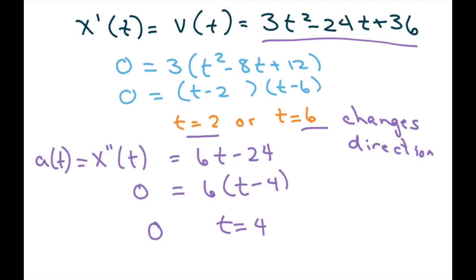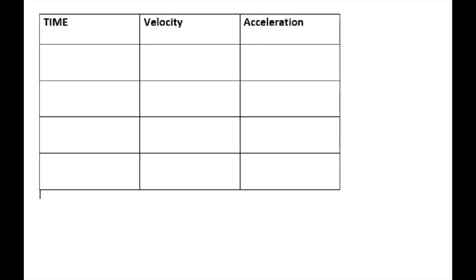Now, we want to find the time interval during which the particle is slowing down. So basically, what we want to do is look between, we have t equals 2 and t equals 6. So we want to look, we're going to start at 0, and we want to also go from 2 to 4 because of our critical point of our acceleration, and then we're going to go from 4 to 6 and then go from t is greater than 6.